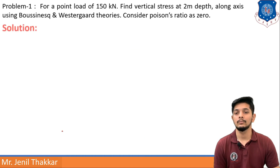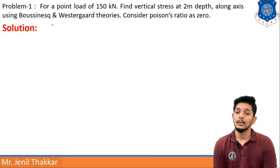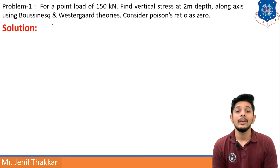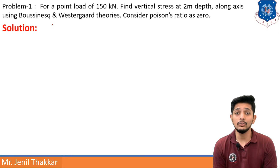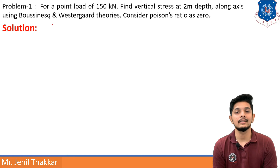Let us move to numericals. Before solving numericals, you must know all the formulas of this chapter. Problem number one: for a point load of Q = 150 kN, find the vertical stress at 2-meter depth along the axis of loading. Apply both Boussinesq and Westergaard theories. Consider Poisson's ratio as 0. Given data: Q = 150 kN, Z = 2 m, R = 0 (since we are along the axis).